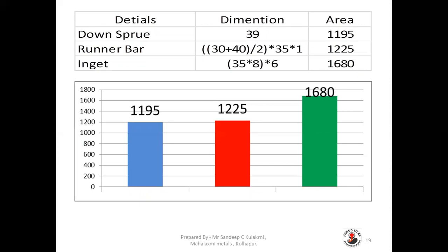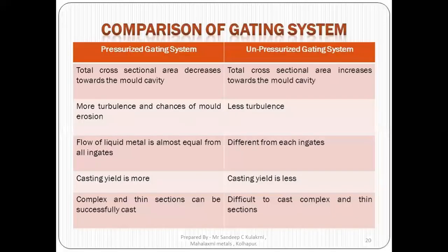Another example: downsprue area is 1195 mm², runner bar is (30+40)/2 × 35 = 1225 mm², and ingate area is 35 × 8 × 6 = 1680 mm². You can see 1195, 1225, and 1680 — the smallest area is the downsprue. There is no backward pressure, and this is a non-pressurized gating system.